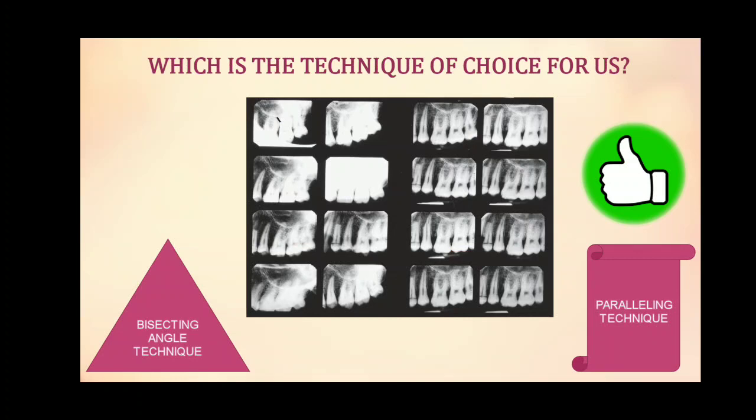Comparing both techniques: on the right side are IOPA images taken by the bisecting angle technique, and on the left side are IOPA images taken by the paralleling technique. Due to accurate imaging and reproducibility, the paralleling technique should be the technique of choice. However, if all the angulations are assessed correctly, the bisecting angle technique is not bad either.